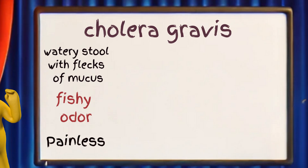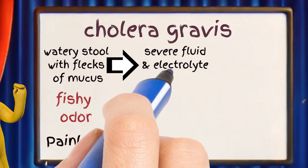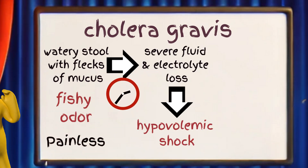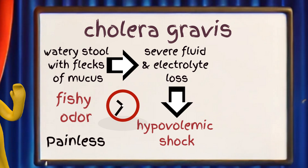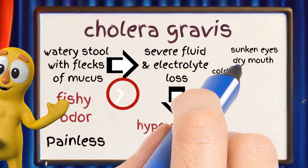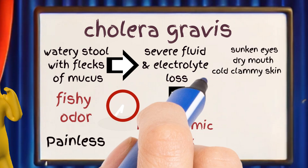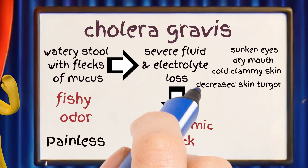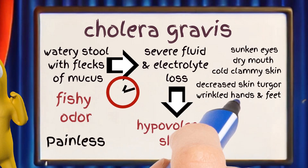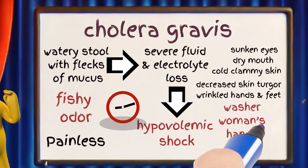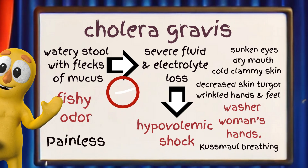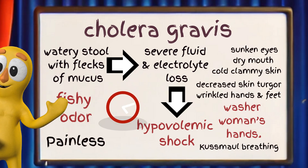With severe fluid and electrolyte loss, patients can develop hypovolemic shock within hours. Signs include sunken eyes, dry mouth, cold clammy skin, decreased skin turgor, and even wrinkled hands and feet — sometimes called washerwoman's hands. Deep breathing, known as Kussmaul breathing, might occur due to acidosis.